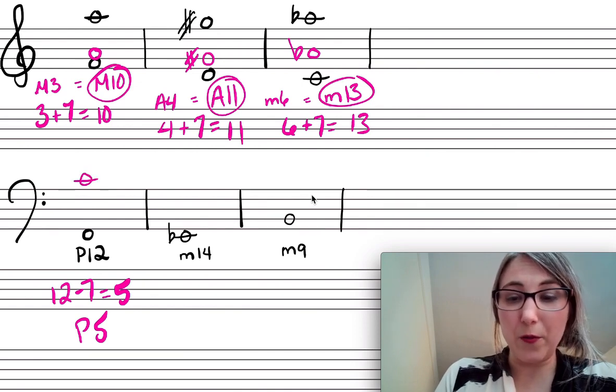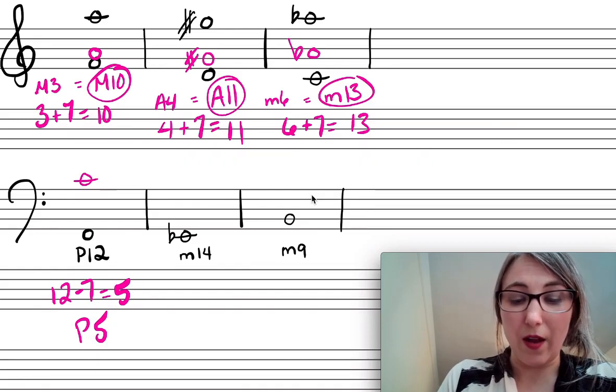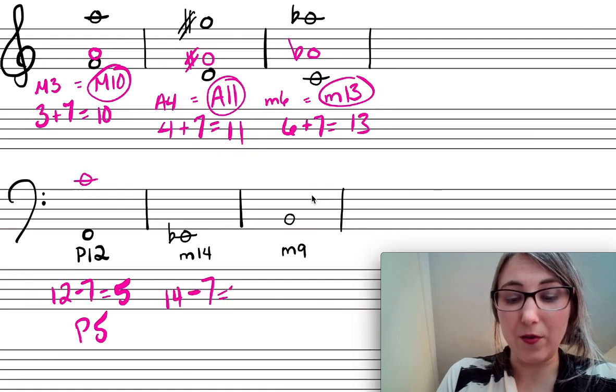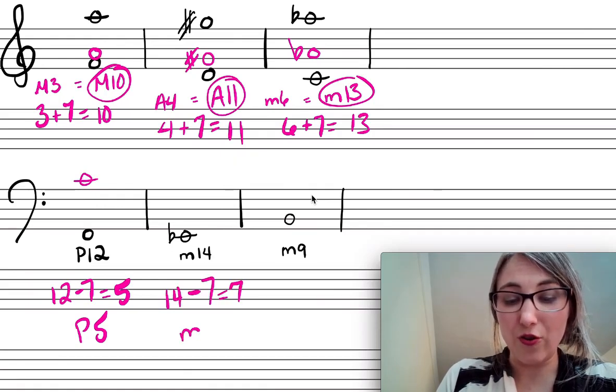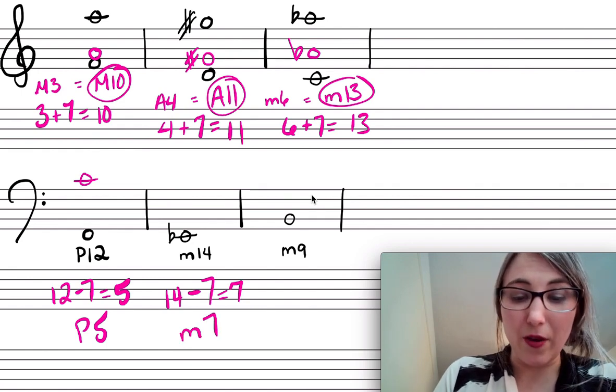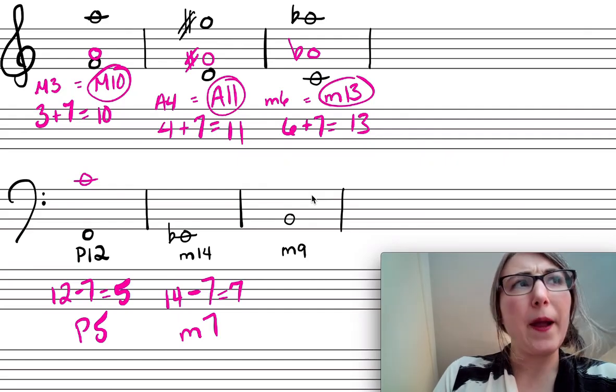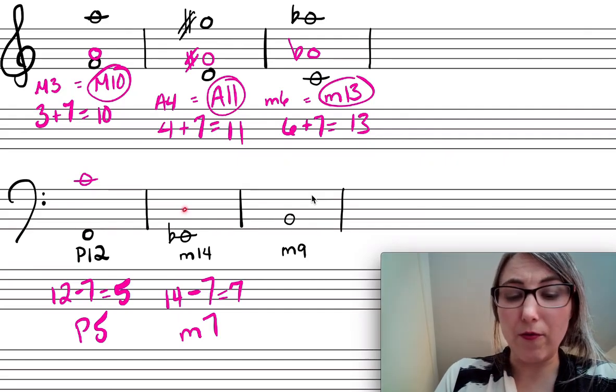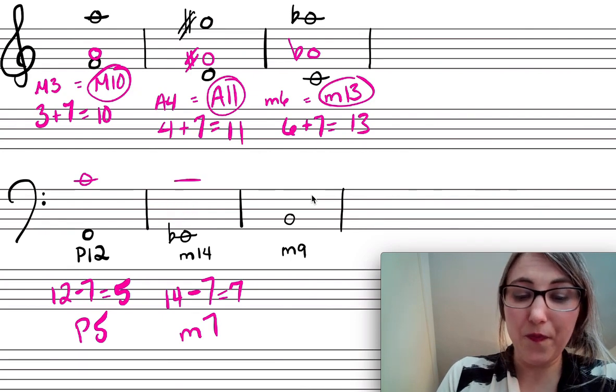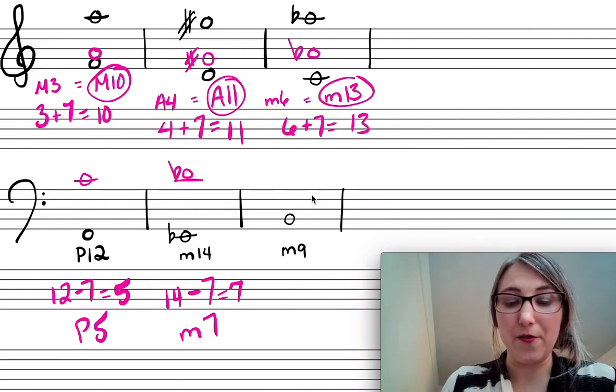Let's do another one. Okay. So minor 14th. So what is the simple version of that? Well, okay. So 14 minus 7 equals 7. So a minor 14th then is actually a minor 7th plus an octave, right? So, okay. So what's a minor 7th above E flat? Well, okay. A major 7th above E flat would be D, right? So that means a minor 7th would be D flat and then I need to add an octave to it, right? Okay. So D flat up here. There it is.